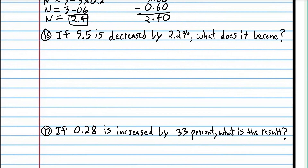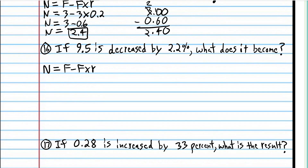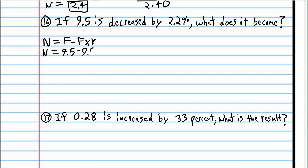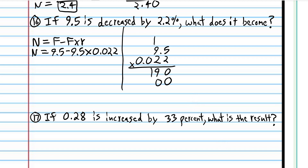Number 16: If 9.5 is decreased by 2.2%, what does it become? This is a decrease, so it's F minus F times R. The original number is 9.5 and we're decreasing by 0.022. We don't have to line up the decimals because it's multiplication. Multiply 2 times 95, put a placeholder 0, then multiply 2 times 95 again. Make sure these numbers are all lined up or you're guaranteed to get the wrong answer.